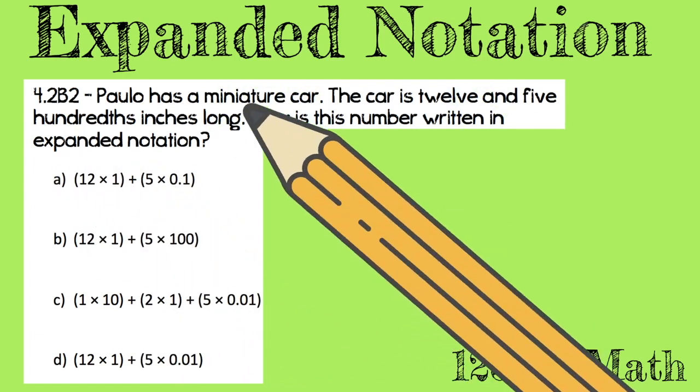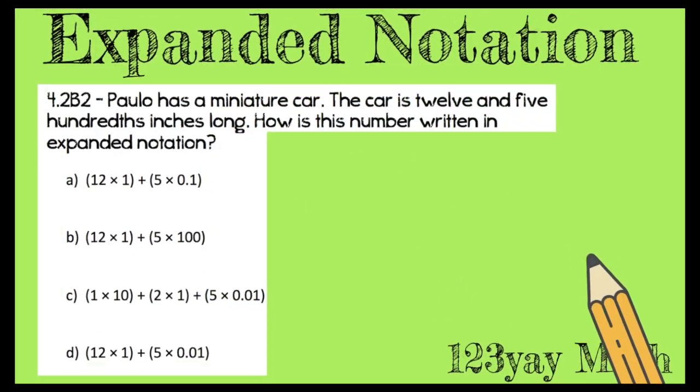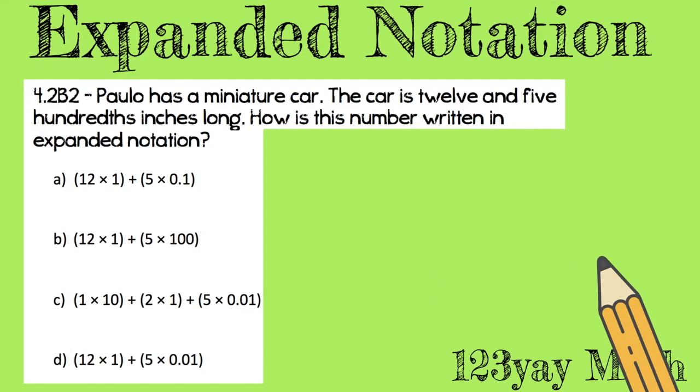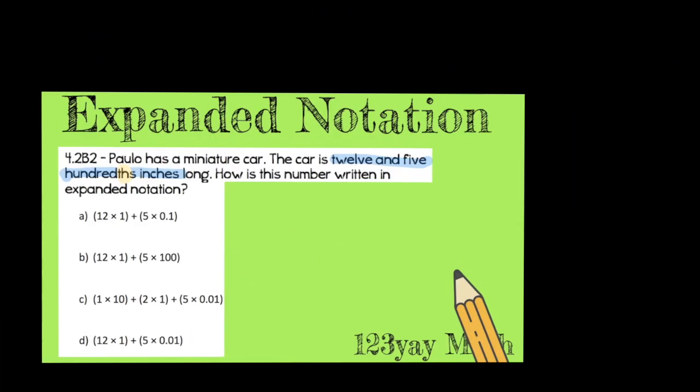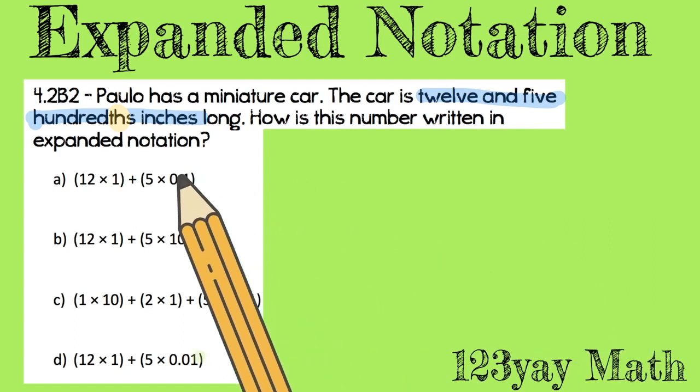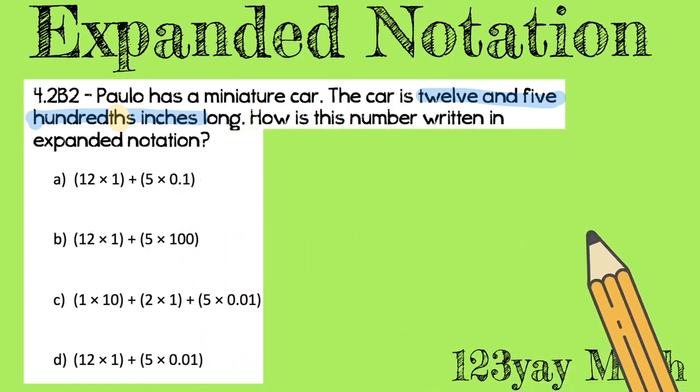How is this number written in expanded notation? We have options A, B, C, and D. Let's solve these together. First step - find the keywords. It says the car is 12 and five hundredths inches long. Just looking at the THS, what are these boys and girls? Yes, the THS are decimals.